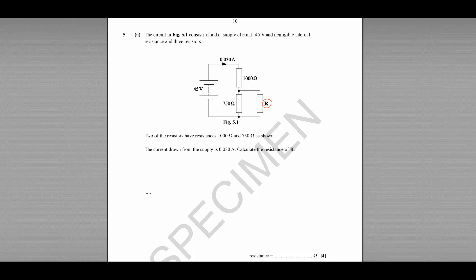There are a few different approaches to this. What I would do is work out the total resistance of the circuit, RT. We know that V equals IR, R being the total resistance. The EMF is 45 volts and the current is 0.03A, so we can rearrange to find total resistance: 45 divided by 0.03, which gives us 1500 ohms.